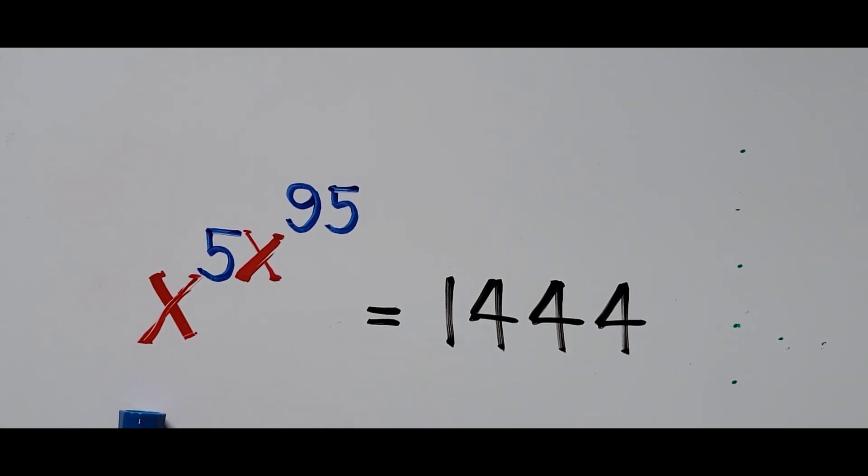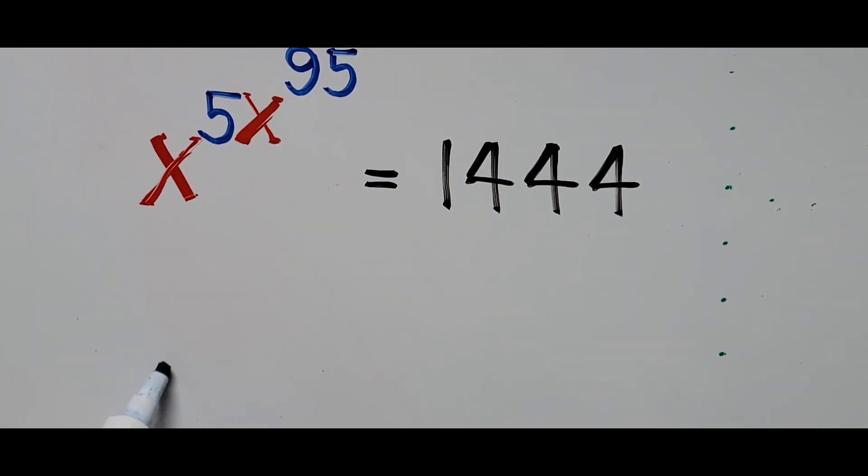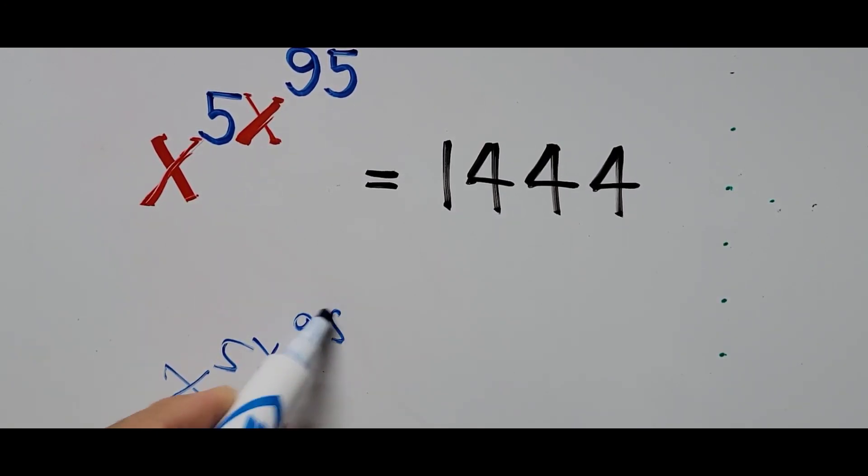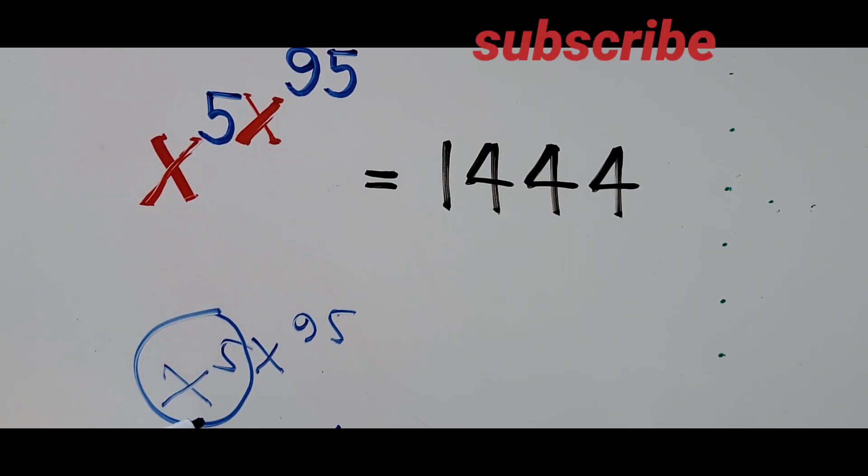focus our attention on the left side of the equation, which is x to the power of 5x to the power of 95. If you notice, this term right here can be separated: x to the power of 5 and x to the power of 95.